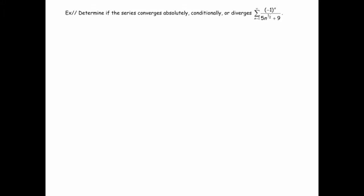I just want to show you one more example of an alternating series and the analysis you would do on it. So let's say we wanted to analyze whether this converges absolutely, conditionally, or if it diverges. The first thing we're going to do is check for absolute convergence, because if that happens, we don't need to check for conditional.